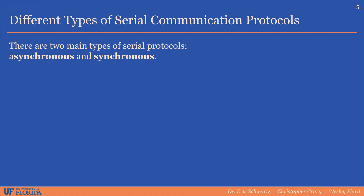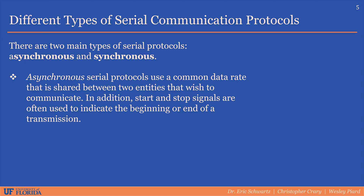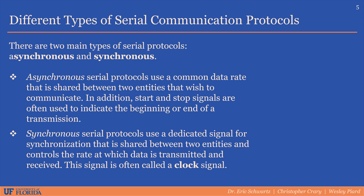The two general categories of serial communication are asynchronous and synchronous. Asynchronous serial protocols require a common data rate to be used by the two entities that wish to communicate. In addition, start and stop signals are often used to indicate the beginning and end of a transmission. Synchronous serial protocols use a dedicated signal for synchronization shared between two entities that controls the rate at which data is transmitted and received. This signal is often called a clock signal.